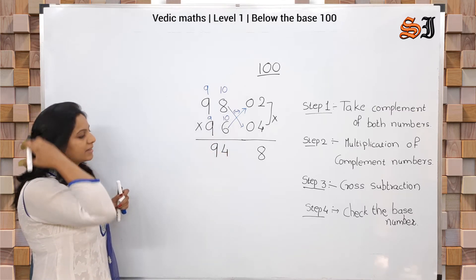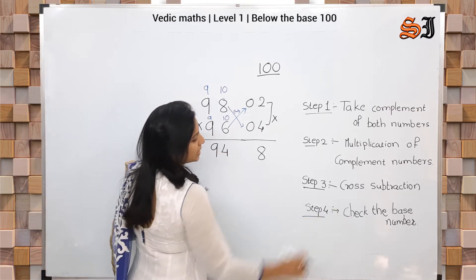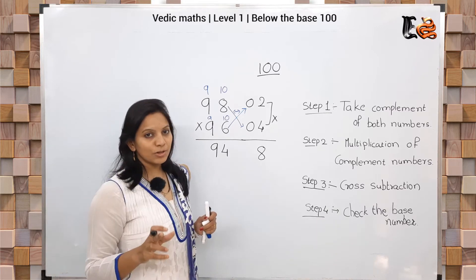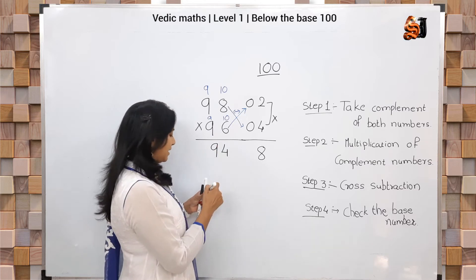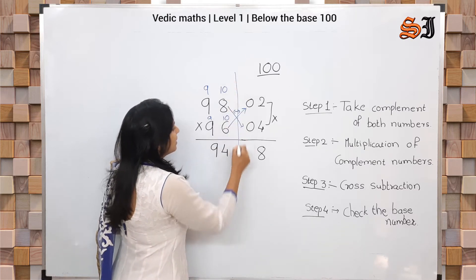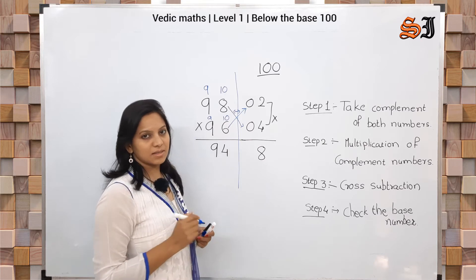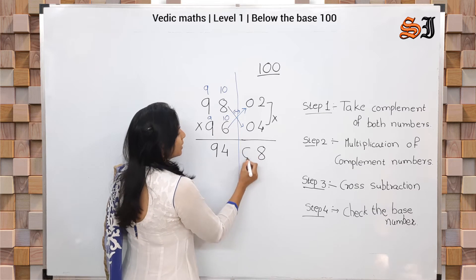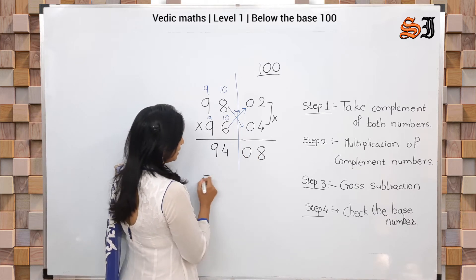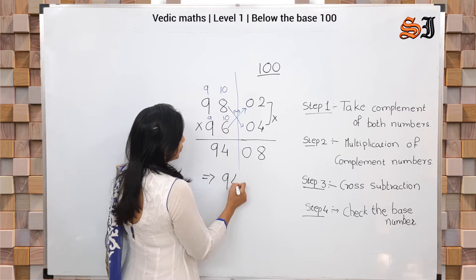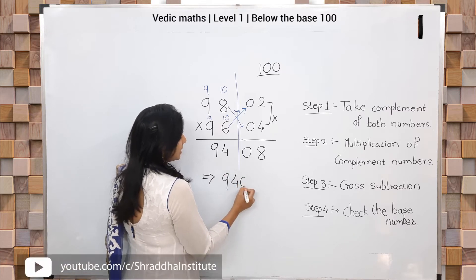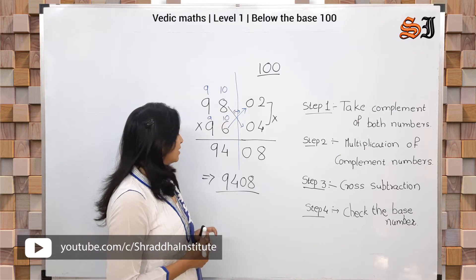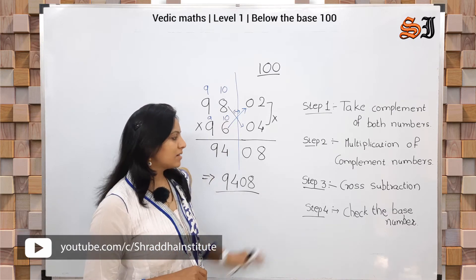So on the left side we write 94. Last step — Step 4: Check the base number. Our base is 100, which has two zeros. So on the right side we need two digits. We already have 08, which is two digits. So the final answer is 9408.